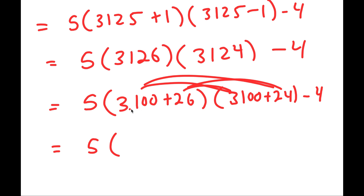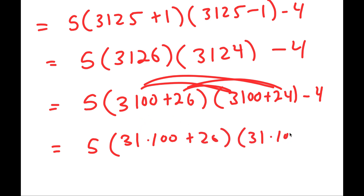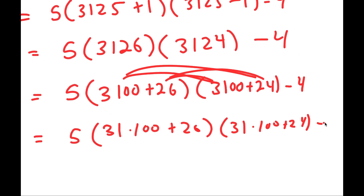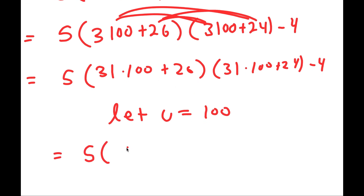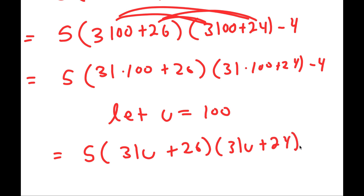I'm going to rewrite 3,100 as 31 times 100. Now I'll use u-substitution, letting u equal 100. So I get 5 times (31u plus 26) times (31u plus 24), minus 4.